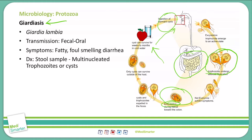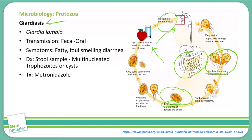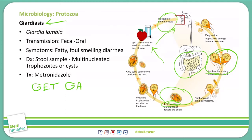Transmission is often seen in daycares as well as camping grounds — people outdoors ingesting contaminated water. The malabsorption causing this fatty, foul-smelling diarrhea is specifically located in the duodenum and the jejunum. To treat this, we use metronidazole. Remember our mnemonic for metronidazole is GIT GAP — one of those G's is for Giardia lamblia.